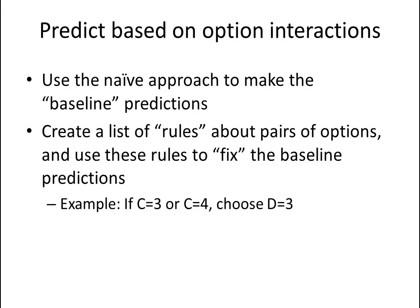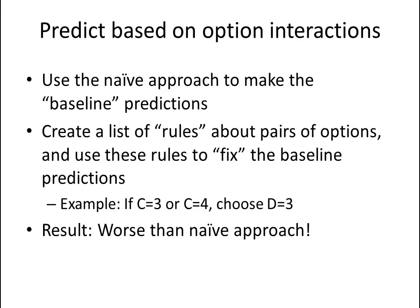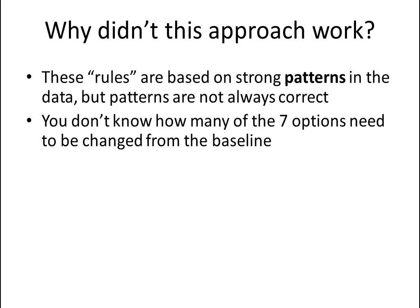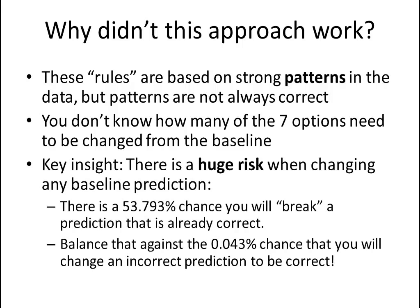Let's try predicting what a customer will purchase based upon these option interactions. We start with the naive approach to make baseline predictions, then create a list of rules about pairs of options and use these rules to fix the baseline predictions. Unfortunately, this approach worked worse than the naive approach. These rules are based on strong patterns in the data, but patterns are not always correct. More importantly, you don't know how many of the seven options need to be changed. The key insight is that there's a huge risk when changing any baseline prediction — there's more than a 50% chance you will break a prediction that is already correct, and you need to balance that against the tiny chance of making an incorrect prediction correct.